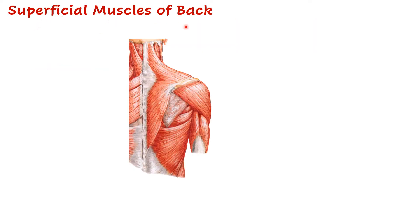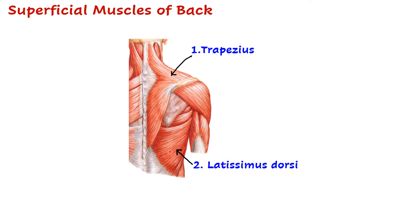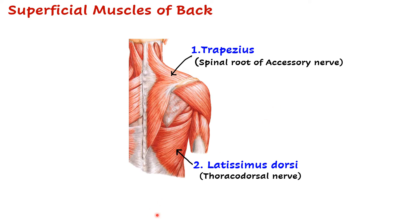One more nerve supplies here and that is the spinal root of accessory nerve. The two superficial muscles of the back associated with the upper limb are trapezius and latissimus dorsi. Trapezius is the only muscle not supplied by a branch of the brachial plexus — it is supplied by the spinal root of the accessory nerve. Latissimus dorsi is supplied by the thoracodorsal nerve, also called the nerve to latissimus dorsi.